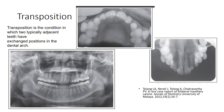Transposition is a condition in which typically adjacent teeth have exchanged positions in their dental arch. This is an example of a case where the canine and premolar were transposed on both sides of the maxillary arch.